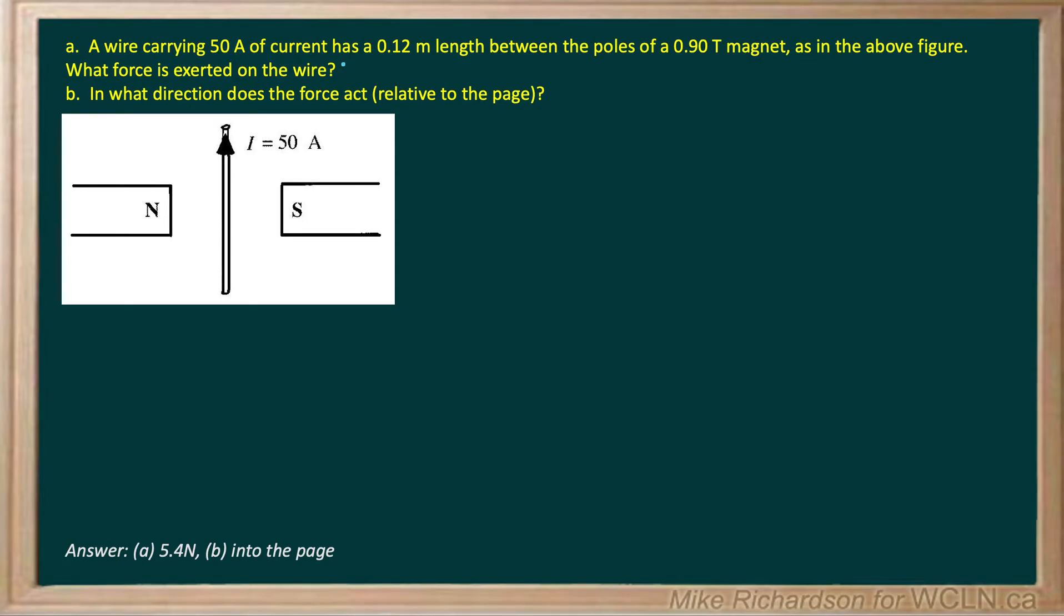Carrying 50 amps of current has a 0.12 meter length between the poles of a 0.9 tesla magnet as shown in the figure below.